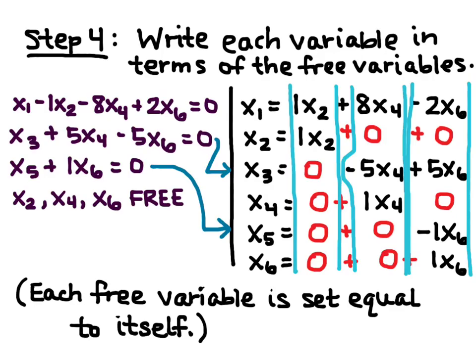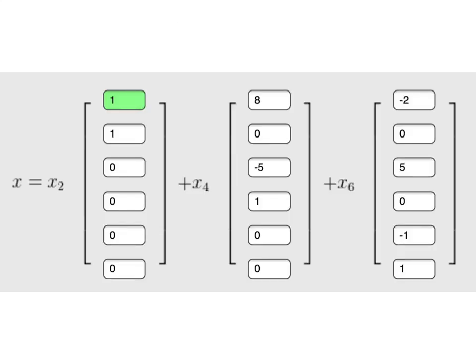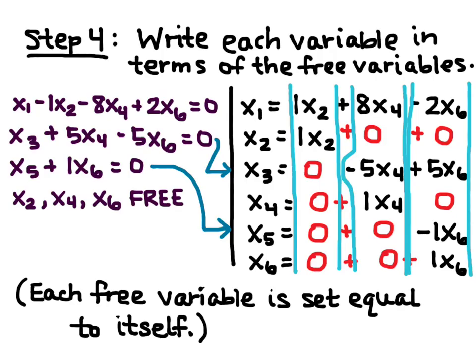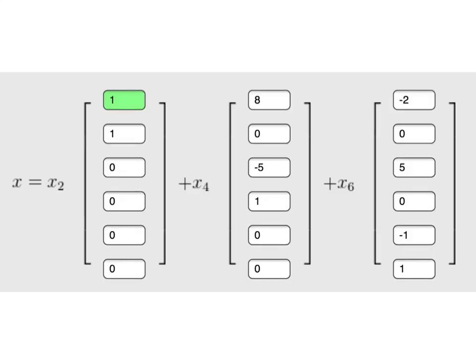So, notice back here, we had our coefficients on X2 were 1, 1, 0, 0, 0, 0. And so, in our first vector, I have 1, 1, 0, 0, 0, 0. X4, if you look back, 8, 0, negative 5, 1, 0, 0. So, that's my second vector, and my third one corresponds as well.